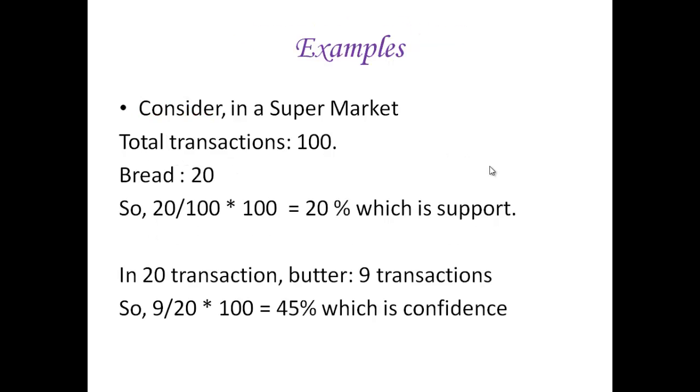Consider this example looking for people purchasing bread. Total number of transactions in a supermarket is 100. Out of 100 transactions, in 20 transactions people are purchasing bread. So, 20 by 100 into 100 equals 20%, which is support.